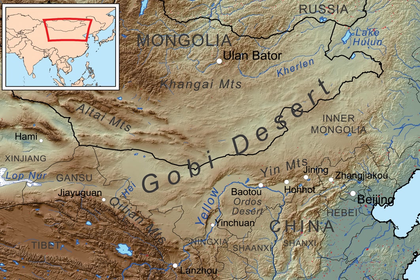It includes the Yin Mountains and many low-lying areas with salt pans and small ponds. It is bounded by the Mongolian-Manchurian grassland to the north, the Yellow River Plain to the southeast, and the Alishan Plateau semi-desert to the southeast and east. The Alishan Plateau semi-desert lies west and southwest of the eastern Gobi Desert Steppe.